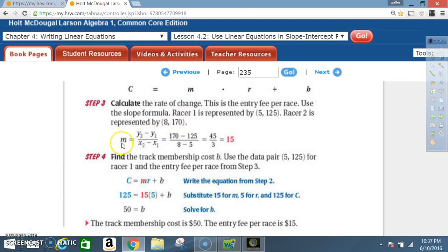Alright, our formula is M equals y sub 2 minus y sub 1 over x sub 2 minus x sub 1, which equals 170 minus 125 over 8 minus 5. 170 minus 125 is 45. 8 minus 5 is 3. 45 divided by 3 is 15.